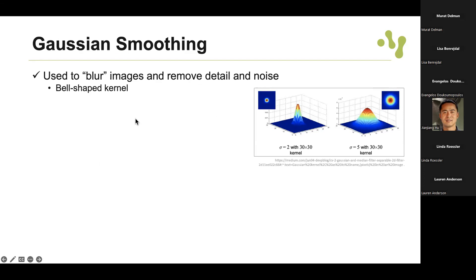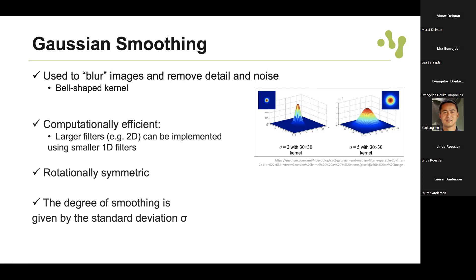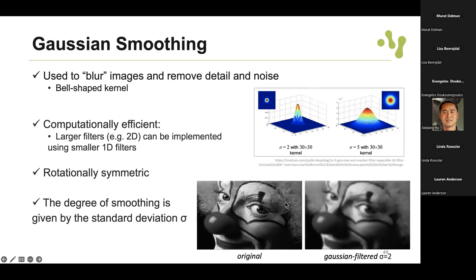The Gaussian filter is also very commonly used - it blurs images and removes detail and noise. It is computationally efficient and rotationally symmetric, with a bell-shaped kernel. The degree of smoothing is given by the standard deviation. Here you can see the clown example with the Gaussian filter applied. Why do we blur images? It can help other steps in the image analysis pipeline - blurring creates more homogeneous regions, which can help when applying thresholding or other segmentation techniques.